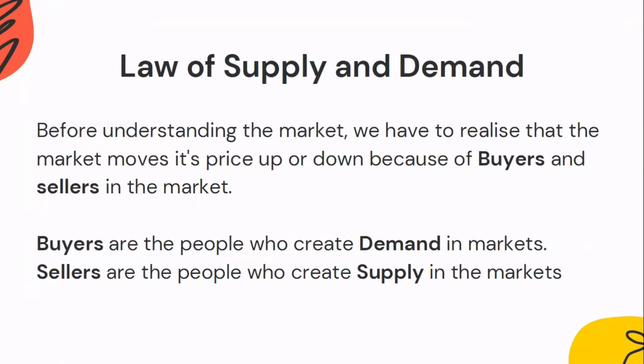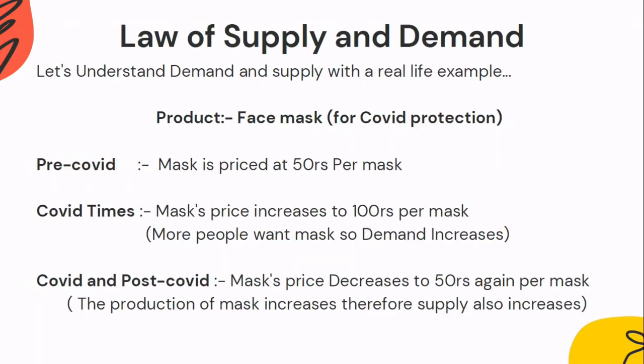Before understanding the law of supply and demand, you have to understand that supply and demand is created by buyers and sellers. If buyers are present in the market, the market will create demand and go up. If sellers are present, the market will create supply and create a downtrend. To help understand demand and supply, I've given you a simple real-life example.